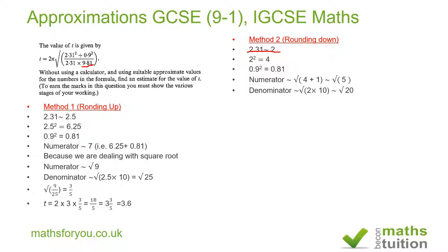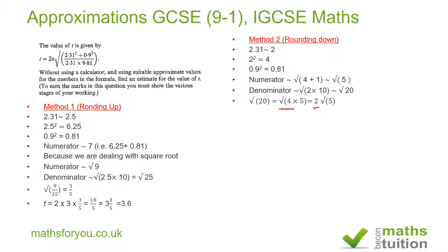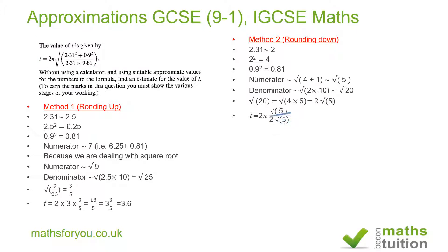So 2 times 10 is 20, and we're looking for the square root of 20. We know 20 is 4 times 5, so that's the square root of 4 times the square root of 5, and the square root of 4 is 2. So t equals 2 times pi multiplied by the square root of 5, divided by 2 root 5. The root 5 terms cancel, the 2s cancel, and you end up with t equals pi.